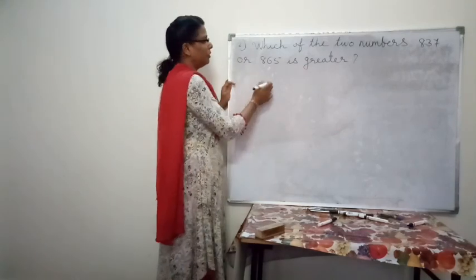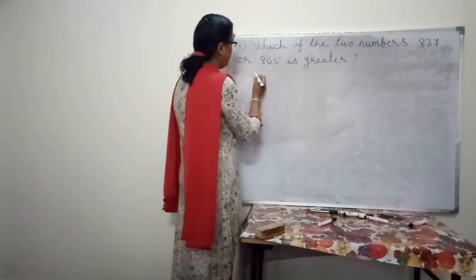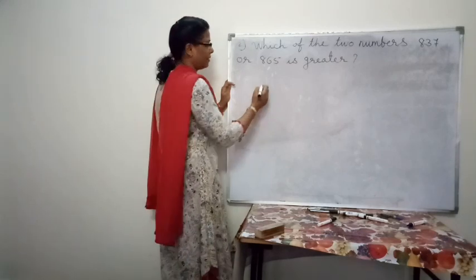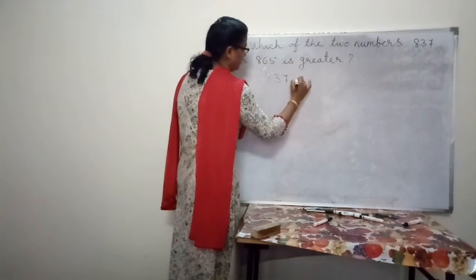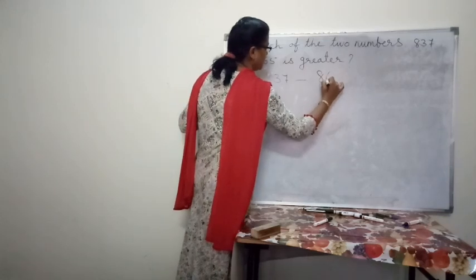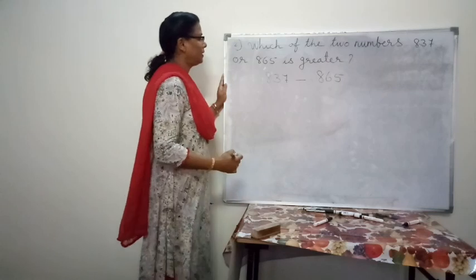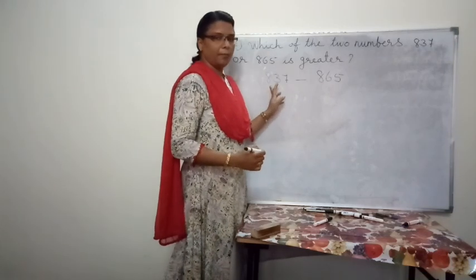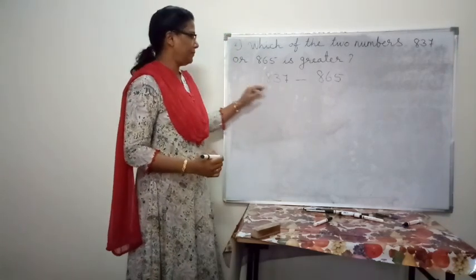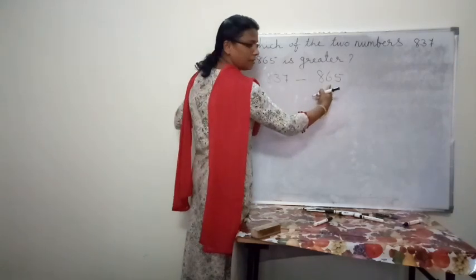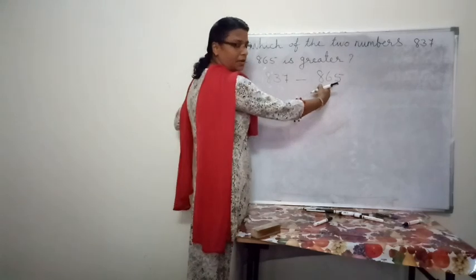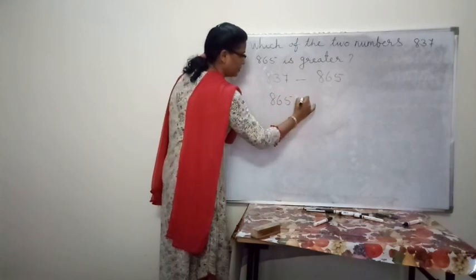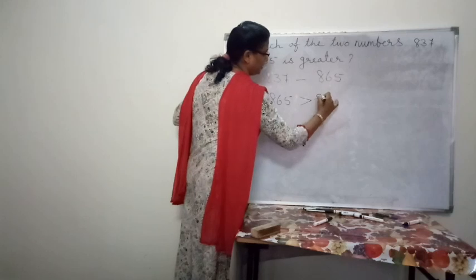Problem number 2: Which of the two numbers, 837 or 865, is greater? The given numbers are 837 and 865. If the digits at the hundreds place are equal, we compare the digits at the tens place. Here it is 3 and here it is 6. 6 is greater than 3. Therefore, 865 is greater than 837.